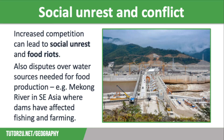This can also be seen along the Mekong River in Southeast Asia, where China has been damming the river for hydroelectric power for many years, and also to stop flooding, which you can see on the screen. But 60 million people in the lower basin rely on the river, and the dams have meant less water downstream, which has lowered rice yields and disrupted fish migration in countries such as Vietnam, Cambodia and Laos.